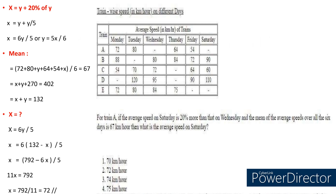When they are asking these type of questions, always give coding. I have given Saturday average speed as X and for Wednesday I have given Y. To start with the first step, the average speed on Saturday that is X is equal to — they are saying it is 20% more than that of Wednesday. So I took Wednesday as Y. I will write Y plus 20% of Y. By just solving that, you will get X equal to 6Y by 5, or Y equal to 5X by 6.